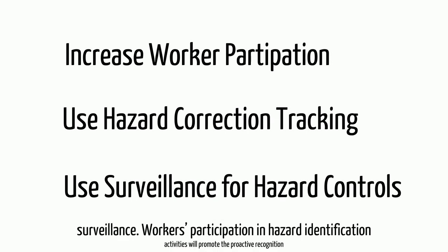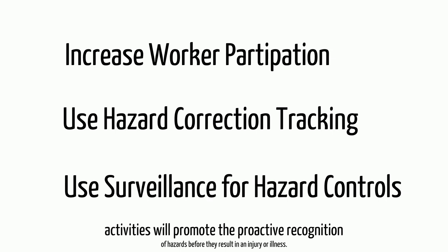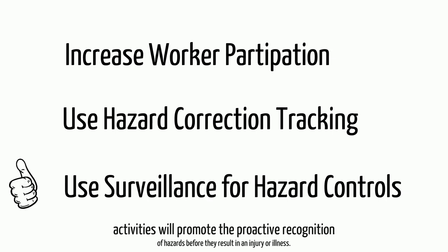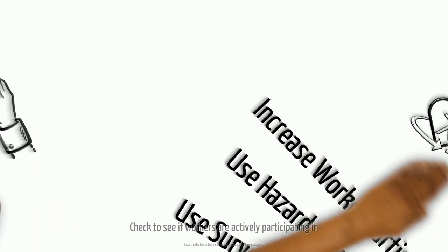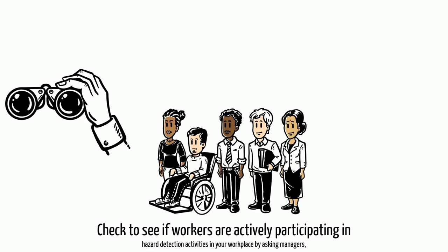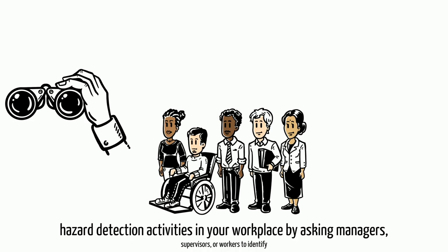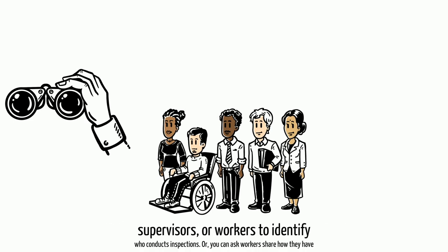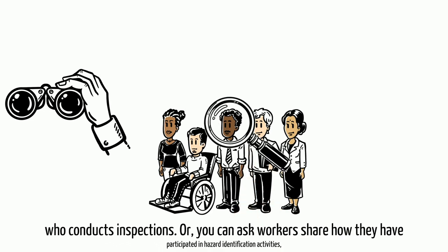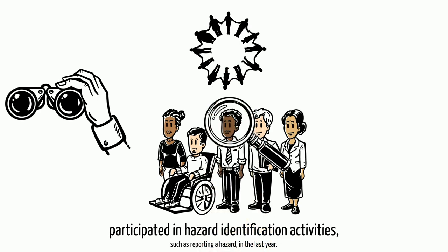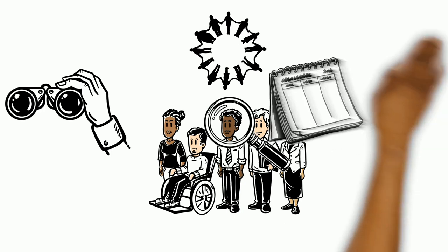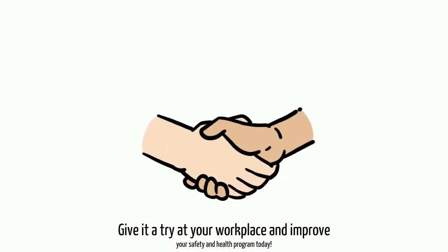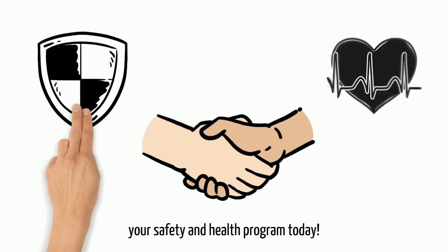Workers' participation in hazard identification activities will promote the proactive recognition of hazards before they result in an injury or illness. Check to see if workers are actively participating in hazard detection activities in your workplace by asking managers, supervisors, or workers to identify who conducts inspections. Or, you can ask workers to share how they have participated in hazard identification activities, such as reporting a hazard, in the last year. Give it a try at your workplace and improve your safety and health program today!